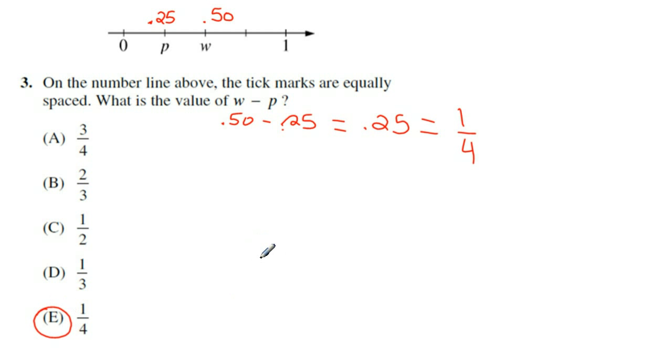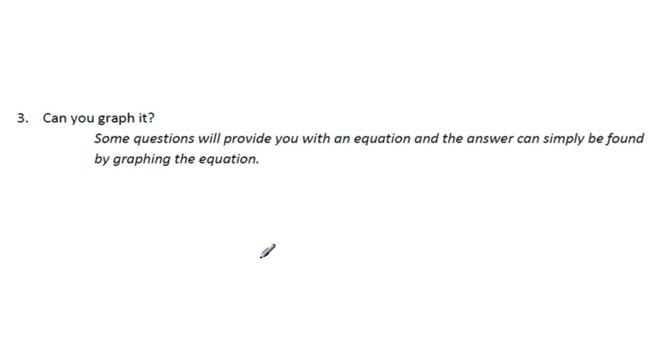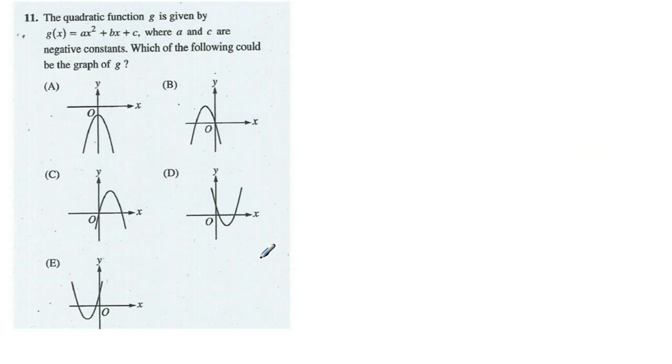So anytime you have variables in your stock, look to use this substitution method. Third thing you want to look at is, can you graph it? So some of these equations will provide you with an equation and the answer can simply be found just by graphing the equation here. Let's take a look at one of those examples. Here's a question from the SAT. It says, the quadratic function g is given by this function g of x equals ax squared plus bx plus c, where a and c are negative constants. Which of the following could be the graph of g?